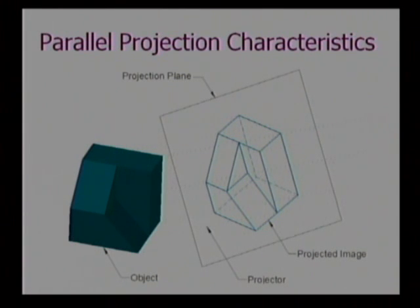One other comment I should make is that in a parallel projection, unlike the perspective projections, all parallel object edges, when projected, will be parallel in a parallel projection. So there are no vanishing points.